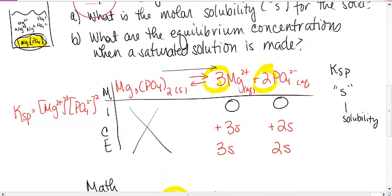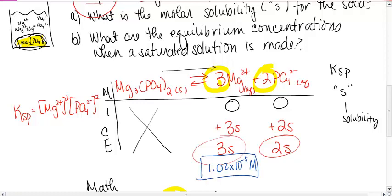The second one is, what are the equilibrium concentrations? Well, 3S and 4S. So, 3S gives me an equilibrium concentration for this of 1.02 times 10 to the minus 5 molar. That would be the concentration of magnesium. And then, 2S, if I take that S and I multiply it by 2, gives me 6.8 times 10 to the minus 6 molar of phosphate. So, these are my equilibrium concentrations.